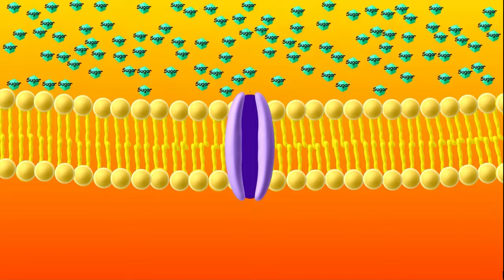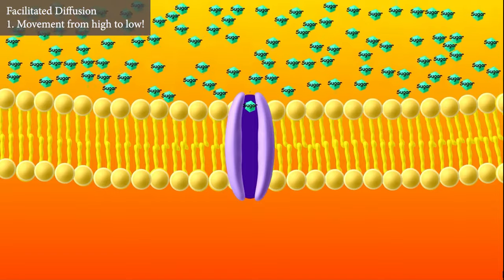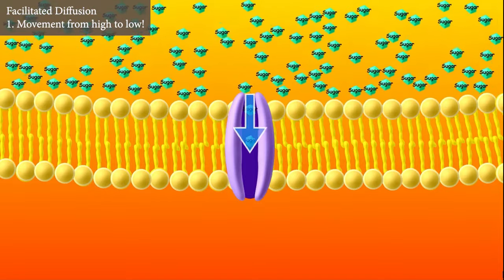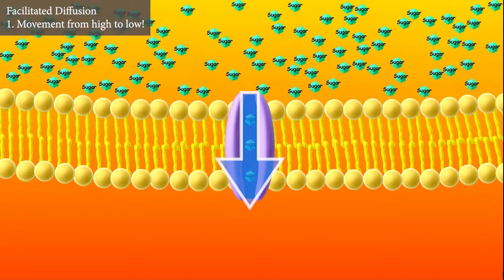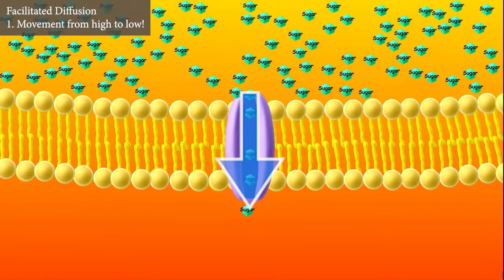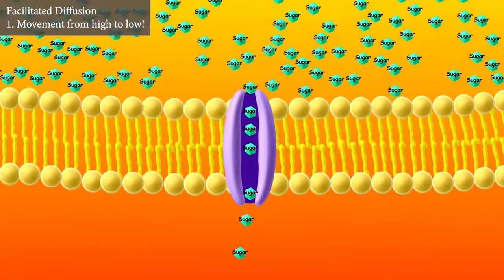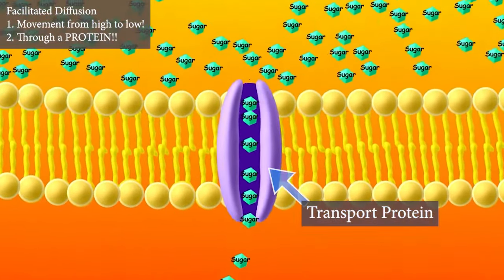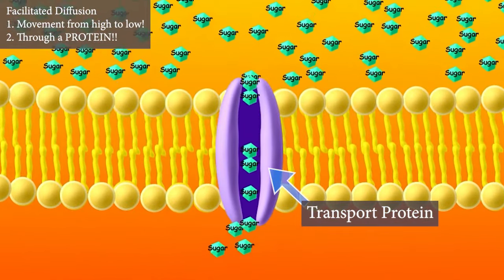In facilitated diffusion, substances move from high to low concentration down their concentration gradient, just like in simple diffusion. The only difference is that the substance diffuses through a protein that acts like a channel or tunnel.